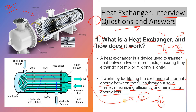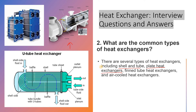The next question is: what are the common types of heat exchangers? In our industry there are different types. For example, shell and tube heat exchangers, plate type heat exchangers, U-tube heat exchangers, as well as finned tube heat exchangers and air cooled heat exchangers.